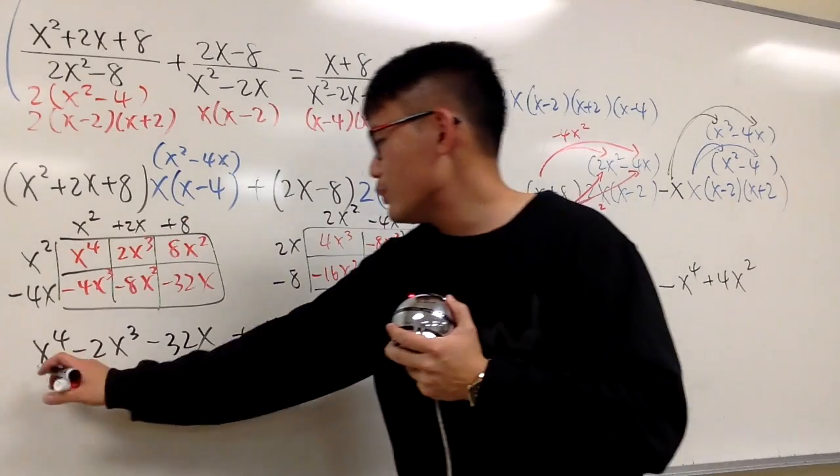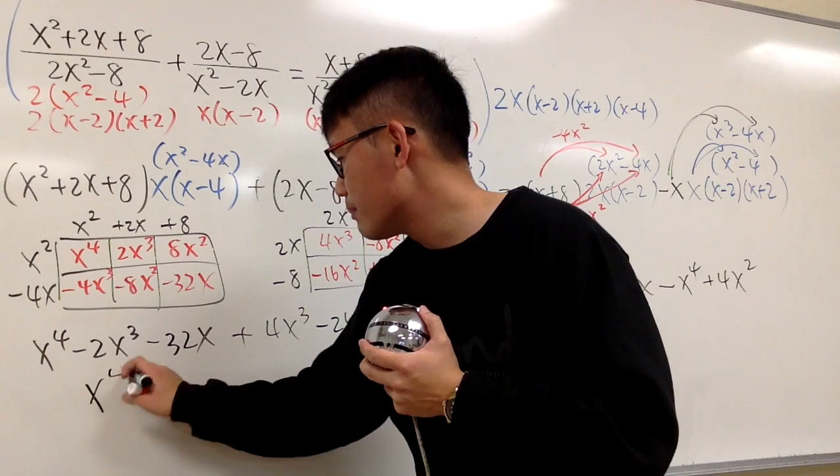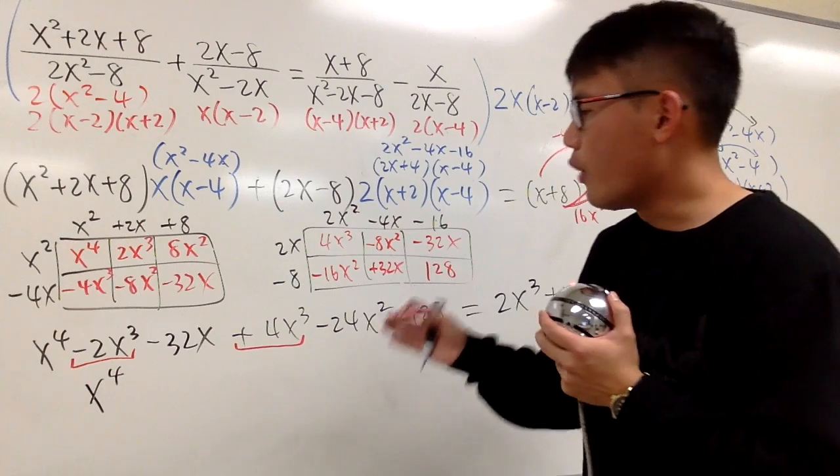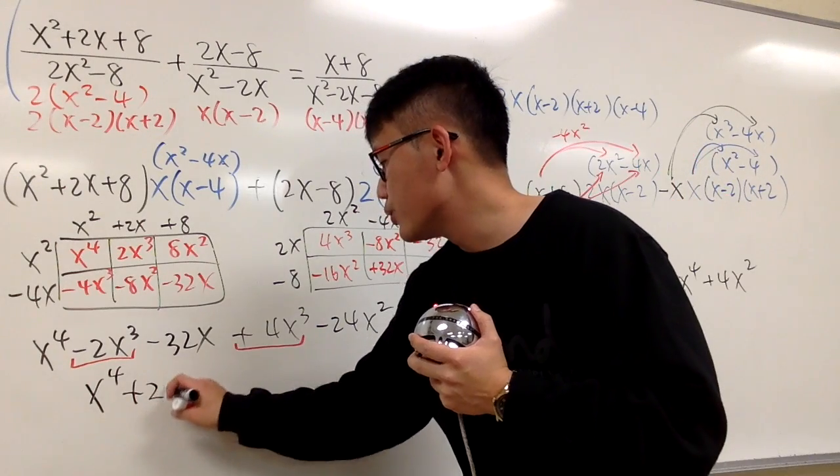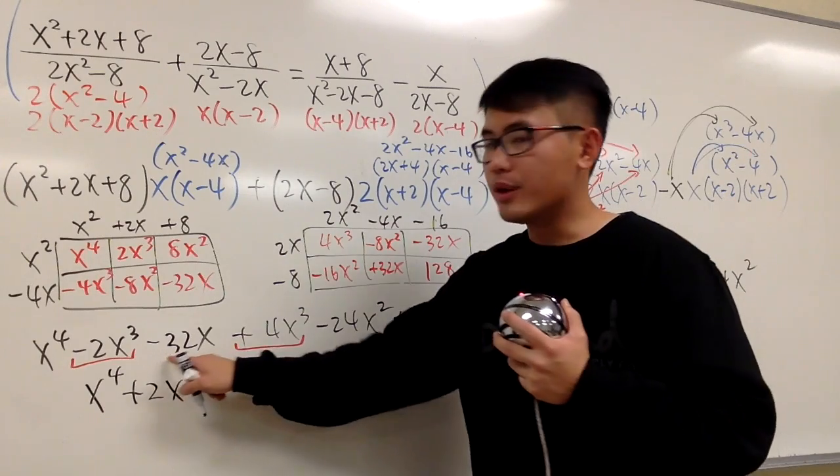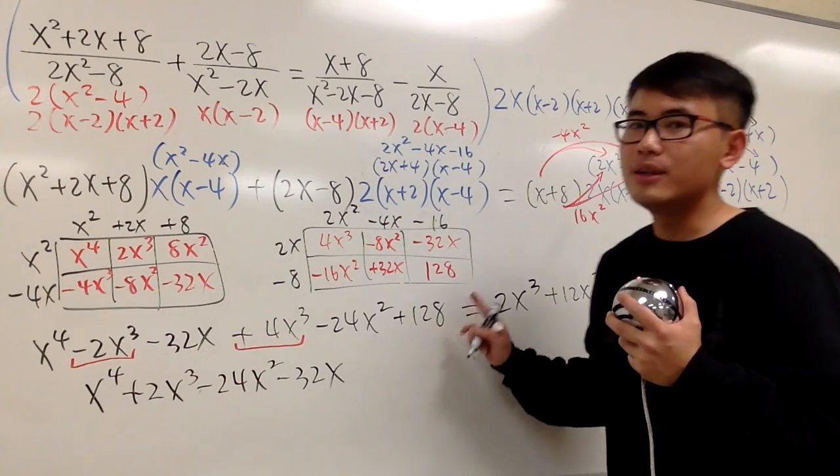It's fun, huh? We see we have the x to the fourth power by itself, so let me just write it down. And we have the negative 2x to the third power, positive 4x to the third power, plus 2x to the third power. And then this is the only x squared term that we have. This is the only x term that we have. And this is the only constant term.